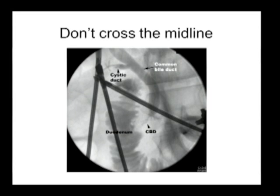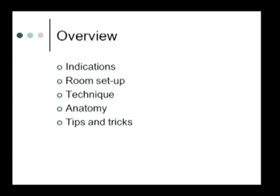Last tip: don't orient your instruments to cross the midline. If you're using an Olsen clamp for cholangiography, I don't like to introduce it through a port that has it crossing my ductal system. Bring it in from the right side to keep the duct imaging clean so you can see the entire length. That's my overview for intraoperative cholangiography — indications, setup, technique, and tips and tricks. Happy to talk about this more during the discussion session. Thank you.